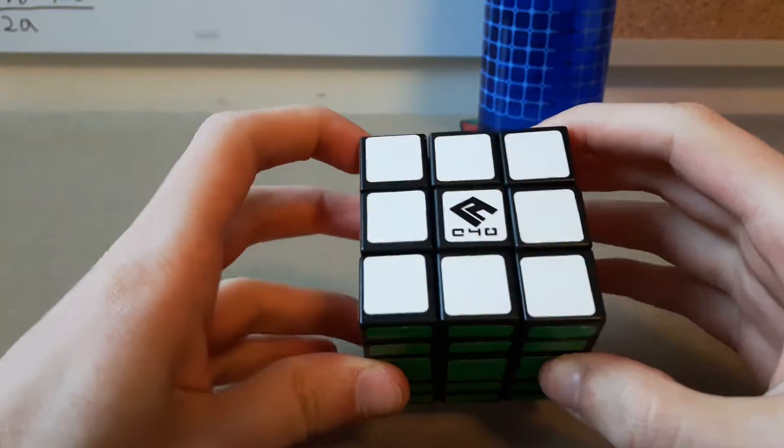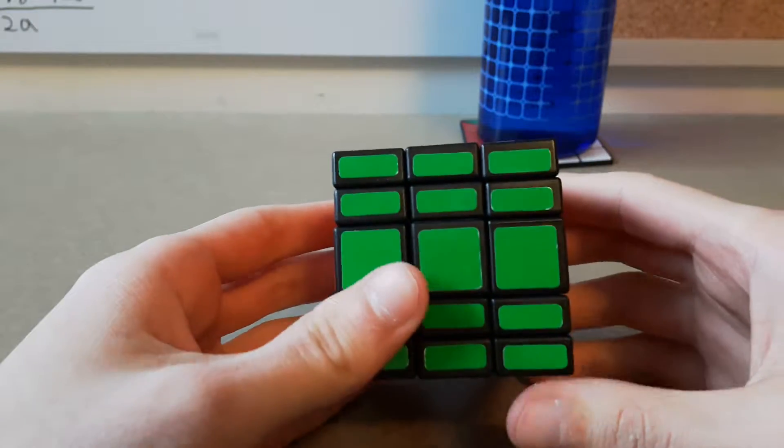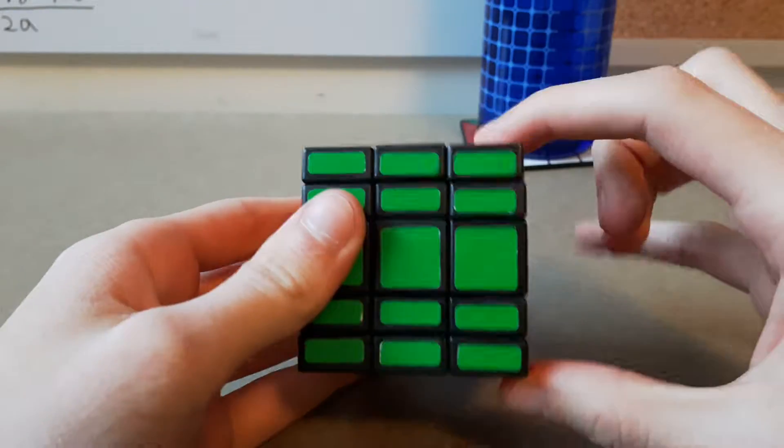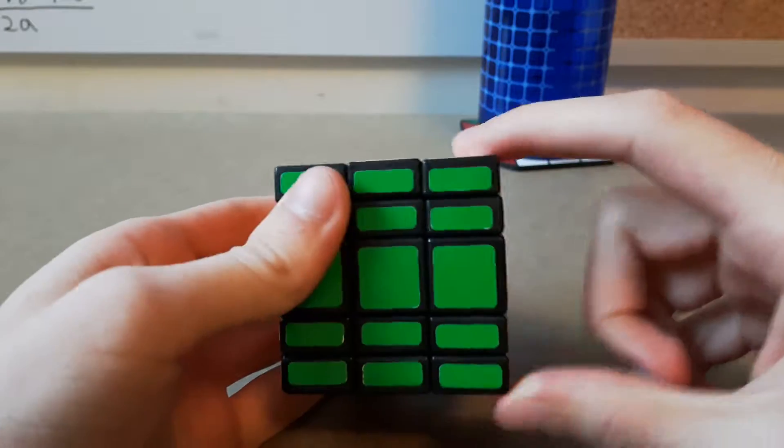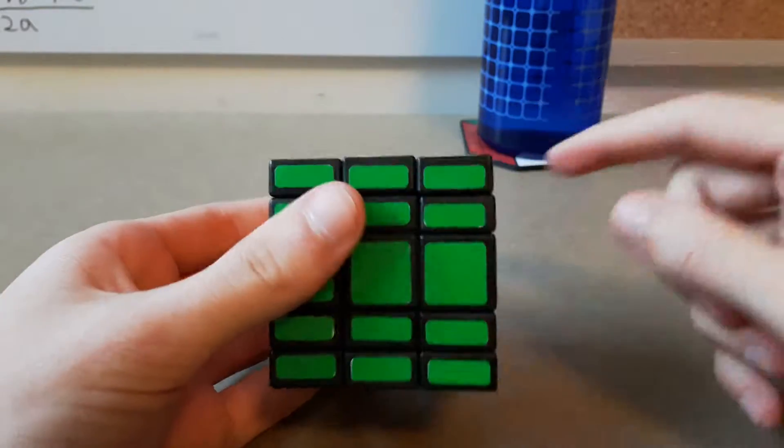So, this is my review on the Cube4U 3x3x5. This is a disproportional one, so it's the same size as a 3x3 and these two layers are the same size as this one layer, so it's just split in half.